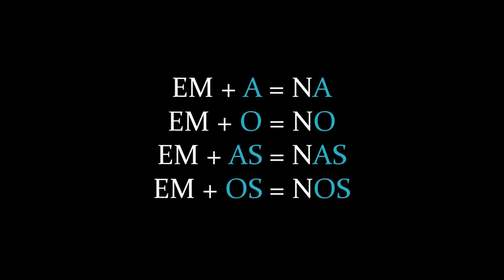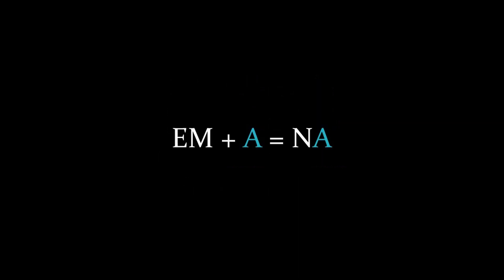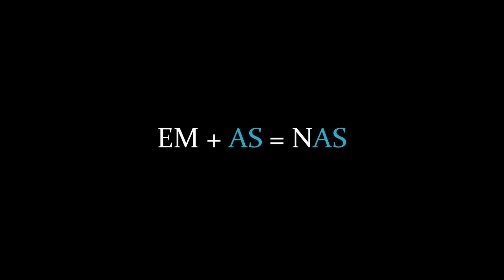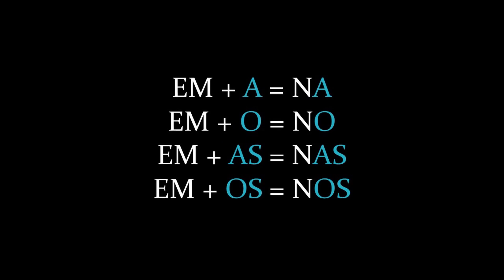The preposition 'em' joins with definite articles as follows: 'em' and feminine article 'a' give us 'na'; 'em' and masculine article 'o' give us 'no'; 'em' and feminine plural article 'as' give us 'nas'; 'em' and masculine plural article 'os' give us 'nos.'